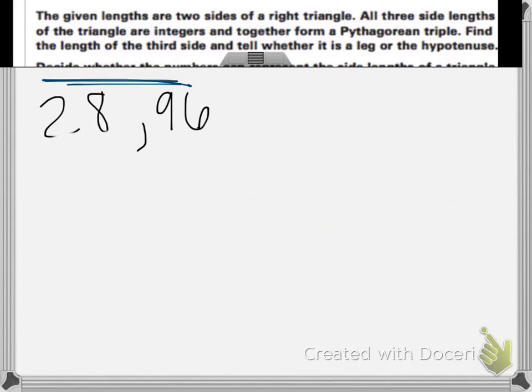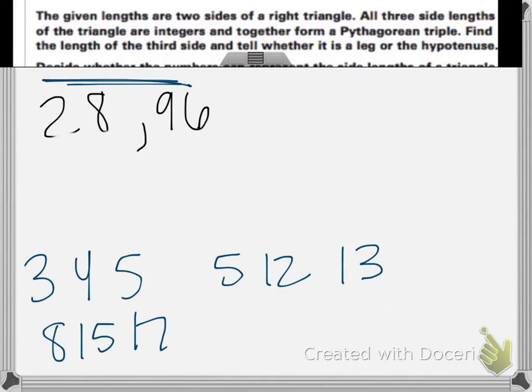Now we'll work with our Pythagorean triples. So the easiest way to learn these is just to memorize them. It can make things simpler if you have them memorized, but you don't really need them. You can just use the Pythagorean theorem. But they are 3, 4, 5, 5, 12, 13, 8, 15, 17, and 7, 24, 25.